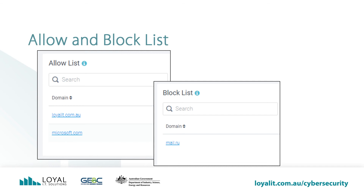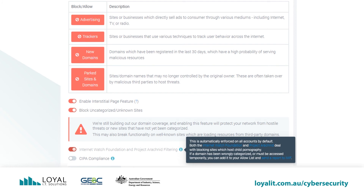All filters have the ability to create allow and block lists. So if certain websites are allowed by a category, they can be specifically denied in block lists, or denied websites can be specifically allowed. For example, if you block the social media category, you can let Facebook through with a specific entry in the allow list. Additional advanced settings allow blocking categories such as advertising to complement ad blockers, blocking tracking websites, new domains, parked sites, and interstitial filtering for uncategorized or unknown domains. Blocking illegal sites follows the rules of the Internet Watch Foundation and Project Arachnid filtering.